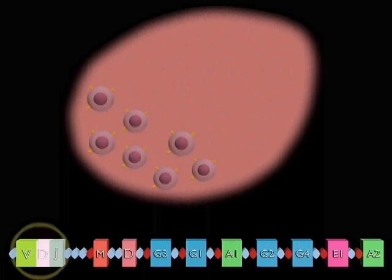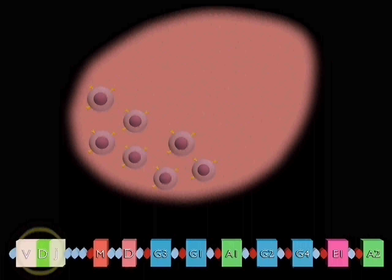A primed B cell enters a germinal center and undergoes rapid division. At the same time, a mechanism is activated which introduces mutations into the DNA around the recombined VDJ gene, so each B cell has a slightly different antibody. Occasionally, a mutation will generate antibody with a higher affinity for its antigen.